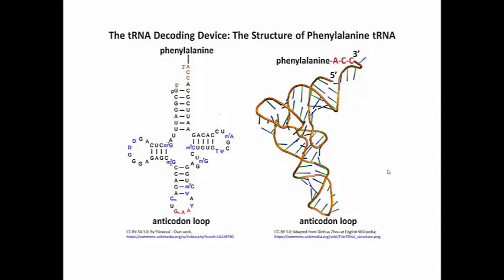On the left you see the traditional cloverleaf structure of a tRNA, and on the right you see what emerges after doing X-ray crystallography of tRNAs — it's kind of an upside-down L-shaped molecule. The 3' end shown here is the amino acid attachment site, and again opposite is the anticodon loop.